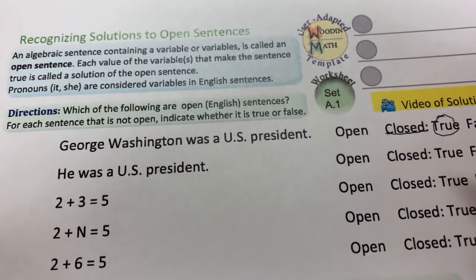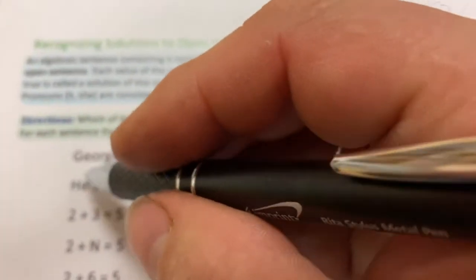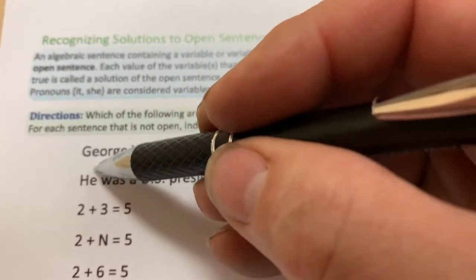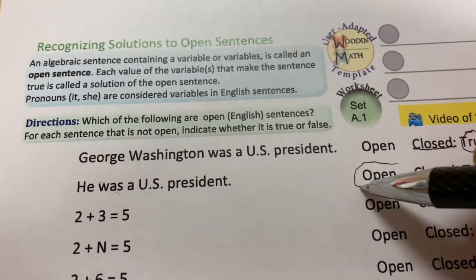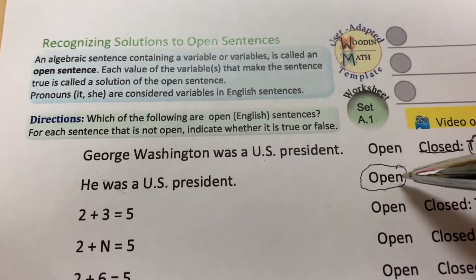He was a U.S. president. He is just like a variable. We could think of that like X. So, that is open. We could put in the right answer or the wrong answer.